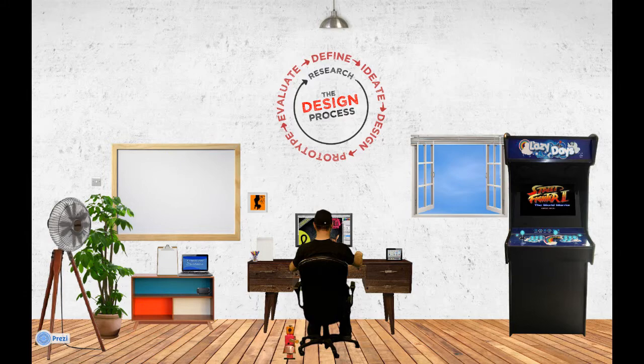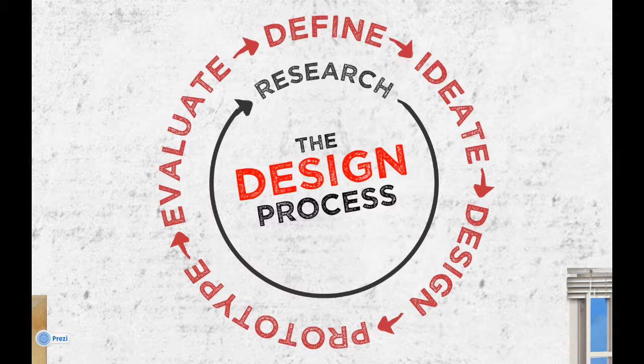In actual fact, the design process is more like this. Although there are different variations, we can all agree on some key steps: we define, we come up with ideas, we design, we prototype, and then we evaluate our product. If necessary, we go through the process again. And constantly, we're researching — research is not something that just happens at the start of a project. It actually continues throughout all the steps, because we should always be researching and looking for ways to improve our product.